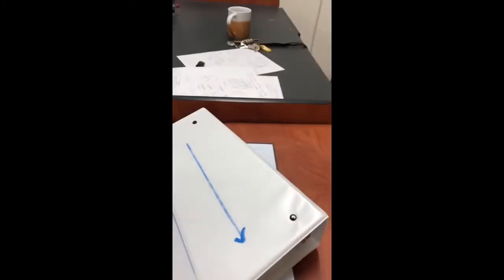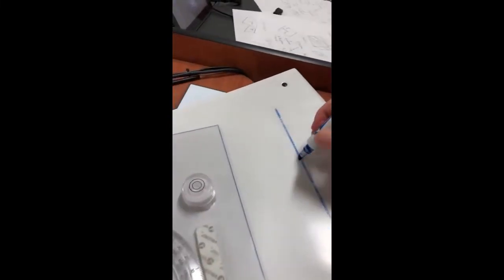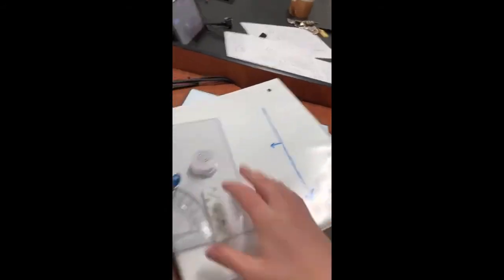So now we have one of the vectors. And if you've ever heard a professor, if you have used a Brunton before telling you, you have to hold your Brunton perpendicular to your strike. It's so that you get the right direction of dip.